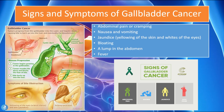Now let's talk about some signs and symptoms of gallbladder cancer. The gallbladder is situated just beneath the liver, and as the tumor starts to grow within the gallbladder it can spread into the cystic ducts. Tumors progress from the gallbladder into the cystic and hepatic ducts, causing bile to back up into the liver and eventually into the bloodstream. A lot of the signs and symptoms related to gallbladder cancer actually involve the liver. The disease progression shows: the tumor begins growing in the gallbladder, invades the ducts, blocks bile flow, and bile backs up into the liver — at which point we have the onset of these symptoms.